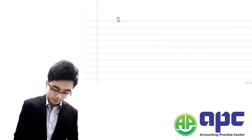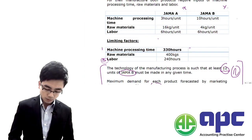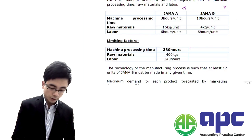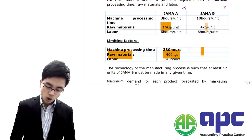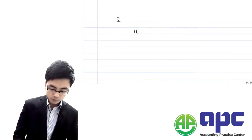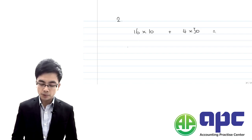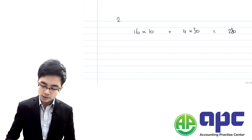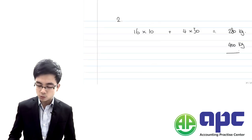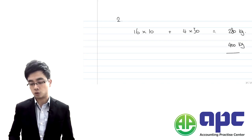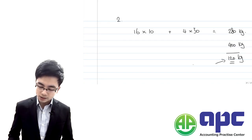The second resource is raw material. The equation is 16x plus 4y, with a maximum of 400 kilos. Producing 10 units of x and 30 units of y: (10×16) + (30×4) = 160 + 120 = 280 kilos. The maximum available is 400 kilos, so we only use 280 out of 400 — leaving 120 kilos unused.